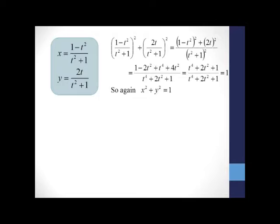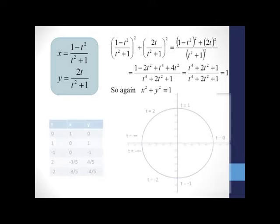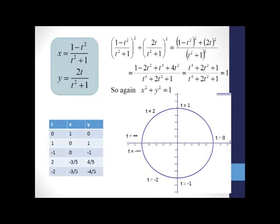And finally, one more representation, this time involving rational polynomials. We can again show that x squared plus y squared equals one. So this set of equations also generates the unit circle. But this time it takes the entire set of real numbers to move one time around the circle.